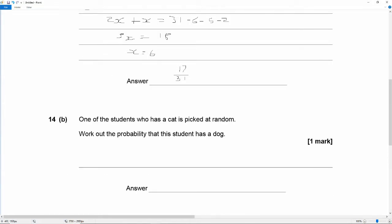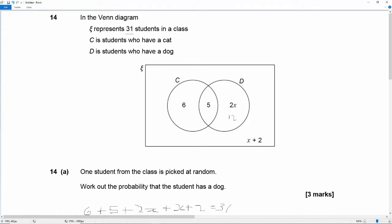14b says one of the students who has a cat is picked at random. Work out the probability that this student has a dog. So we're only looking at the number of students that have a cat. So our sample size equals 6 plus 5 is 11.